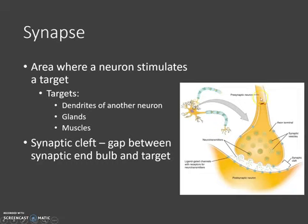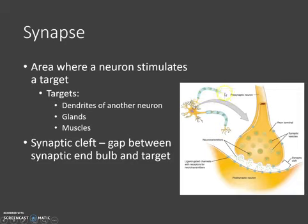Now, if we look here, this is showing where the axon terminal and synaptic end bulb of one neuron is meeting up with the dendrite of another neuron. You can see up here it's showing this neuron meeting up with this neuron here.